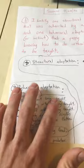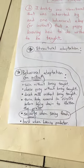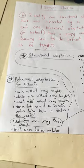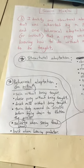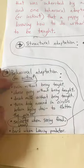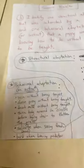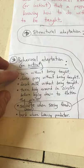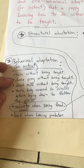Some behavioral adaptations — also known as instincts — are things you are born knowing how to do; you do not need to be taught them. For puppies, they can swim without being taught. You put a puppy in the water and it knows how to swim. It doesn't have to be taught how to do that. That's an instinct or a behavioral adaptation.